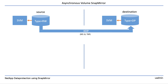When creating a relationship, this relationship will be of a particular type. The default type is XDP, which is equivalent to a Vault relationship, so that's for backups. The other types are DP for disaster recovery purposes, LS for load share, which will be dealt with in a later module, and TDP — transition data protection — which is beyond the scope of this course because it deals with migrating data from a 7-mode cluster to ONTAP.